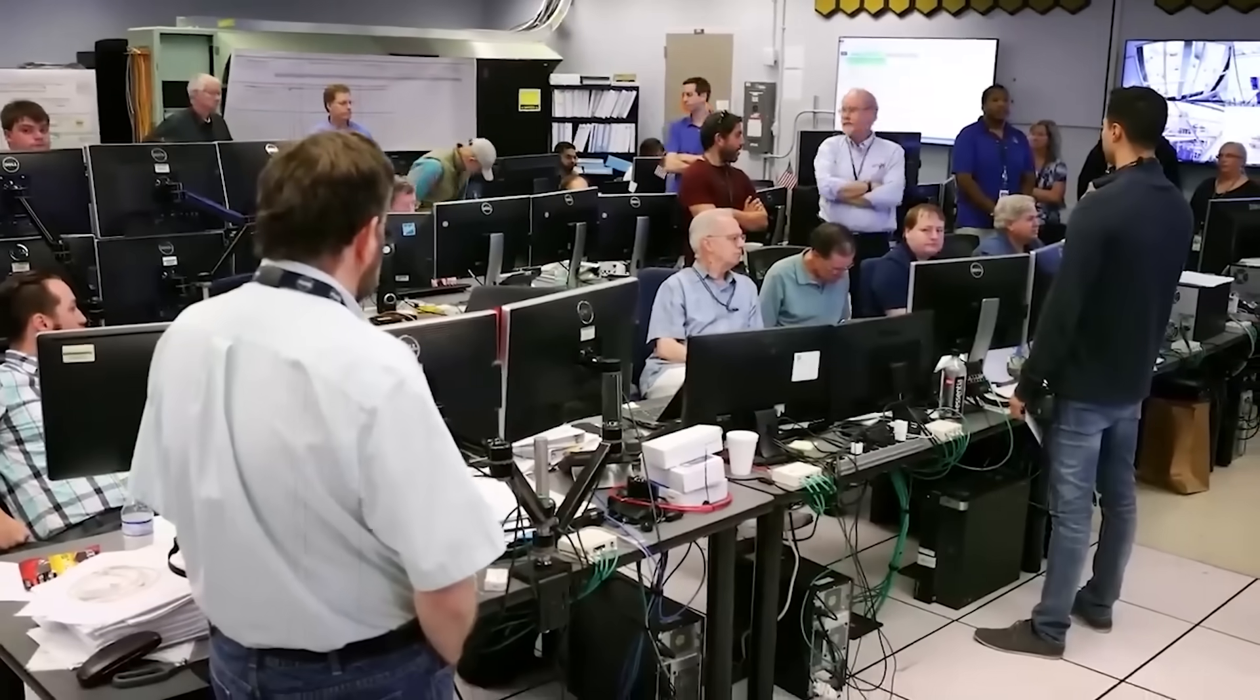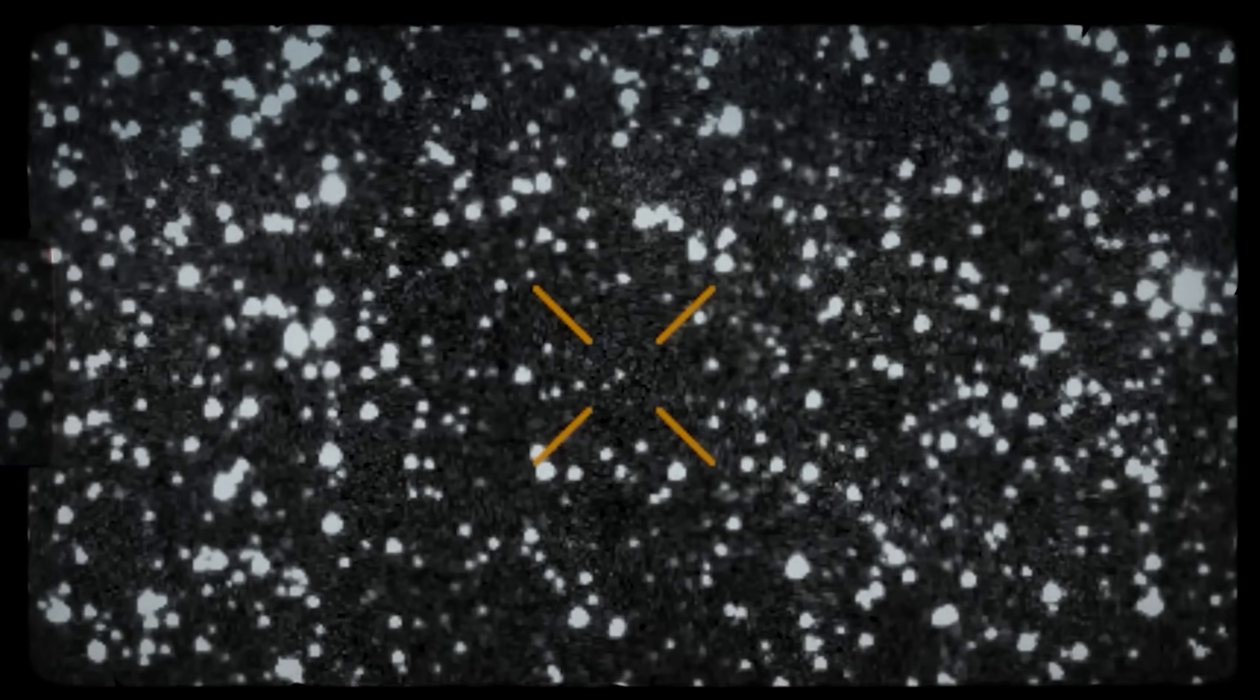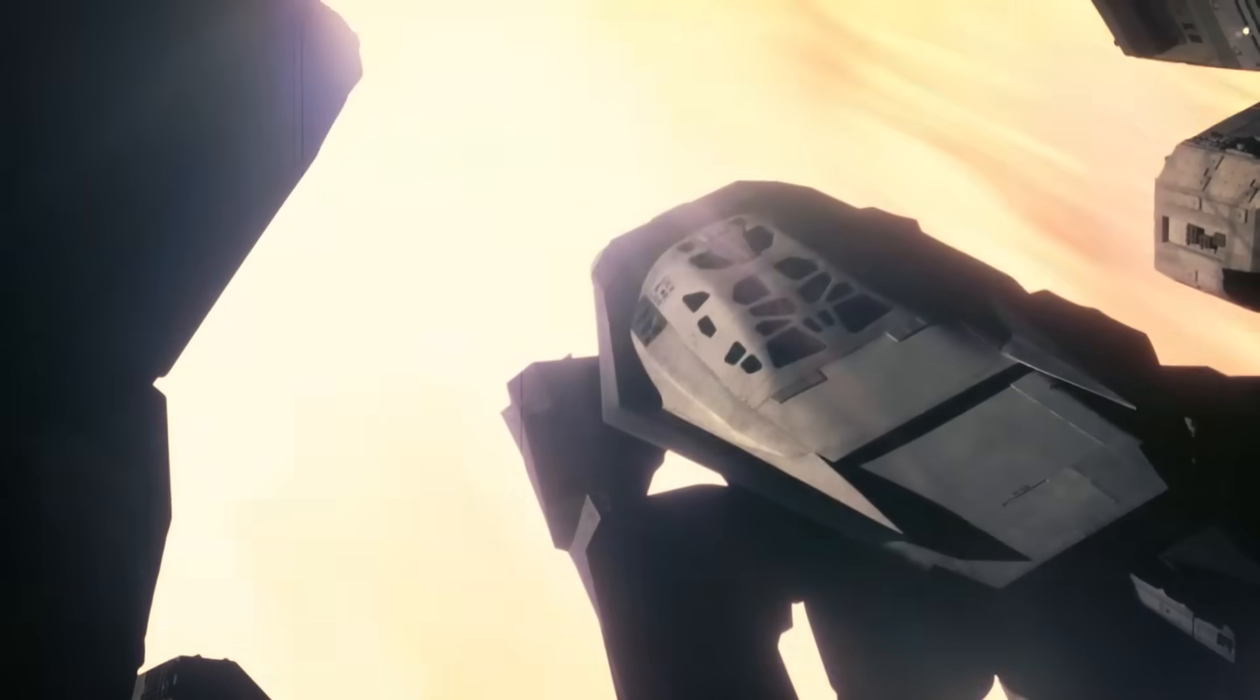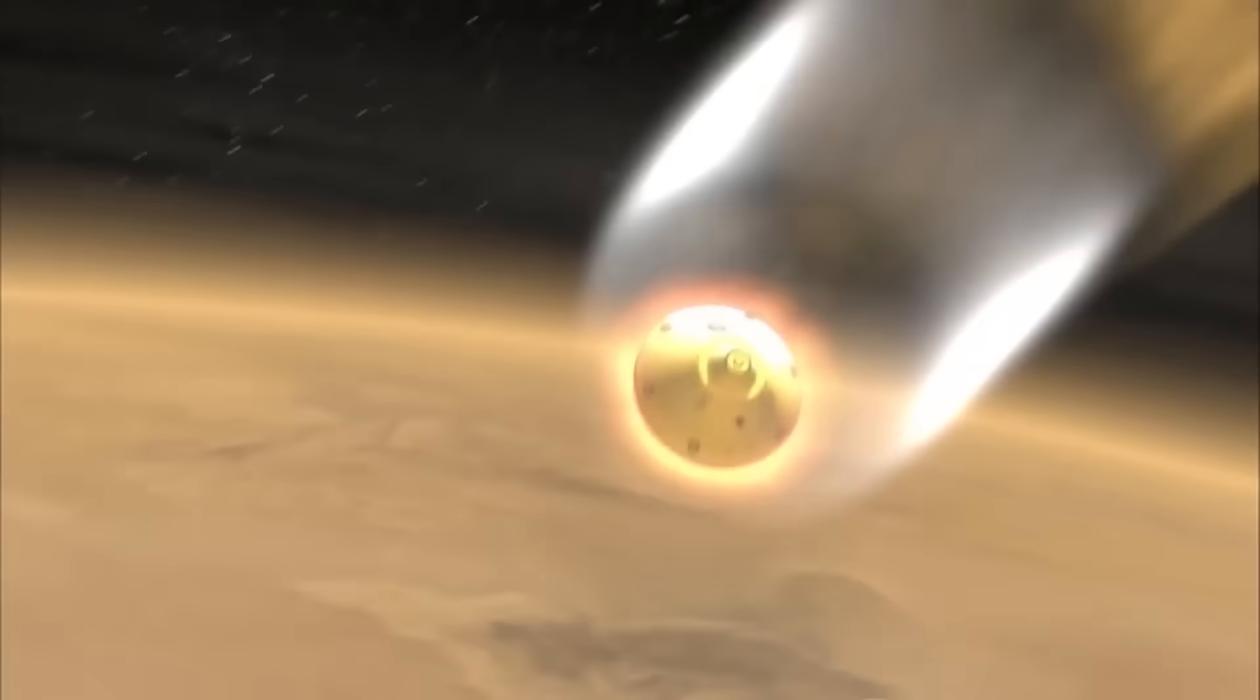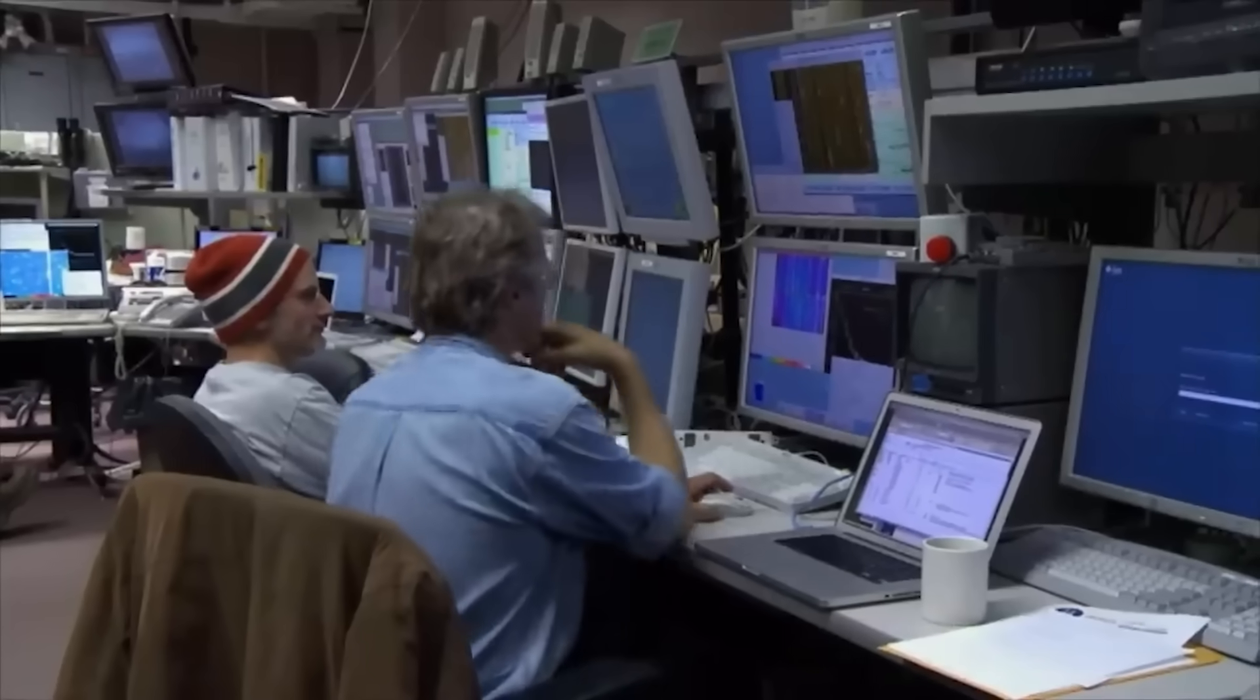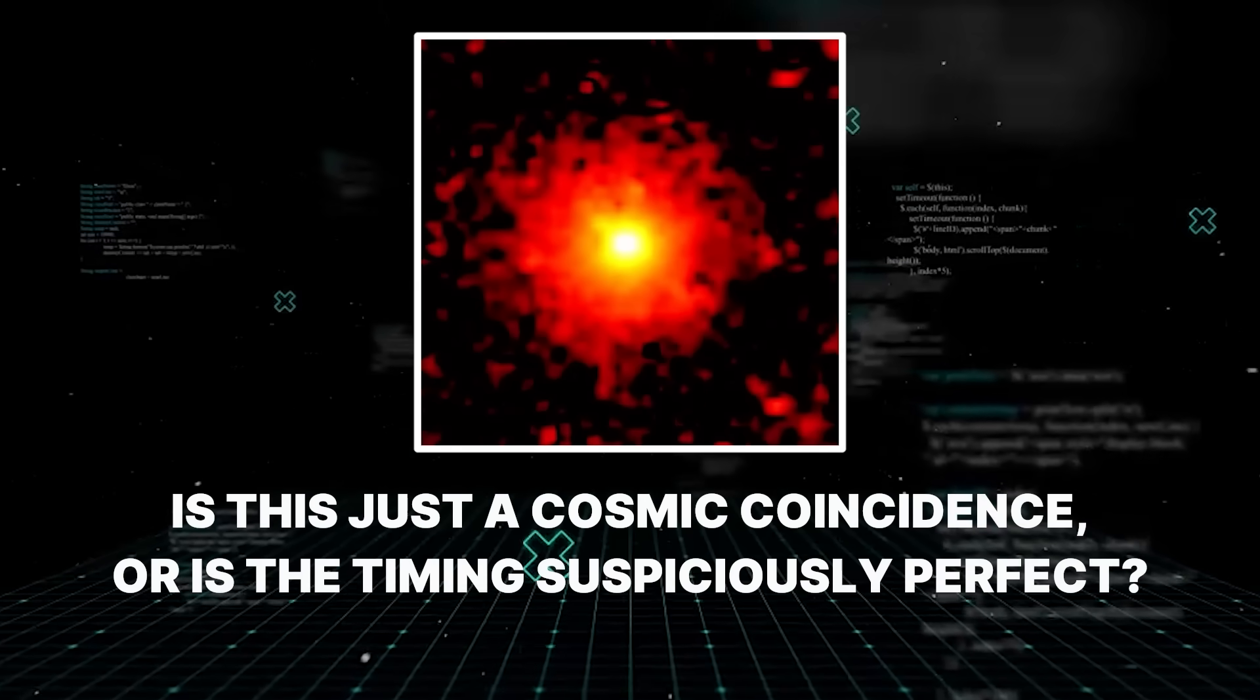This is the moment that has every astronomer holding their breath. The thing is, this period of darkness is the perfect time for an object to make a maneuver. At perihelion, an object has its highest kinetic energy. A tiny nudge, a small burn from an engine, has a massive effect on its future trajectory. If 3I Atlas were, for instance, a probe slowing down to enter an orbit, this is exactly when and where it would do it, completely hidden from our prying eyes. Is this just a cosmic coincidence, or is the timing suspiciously perfect?